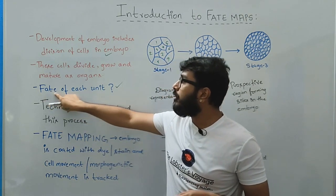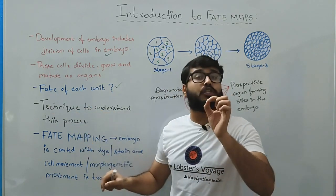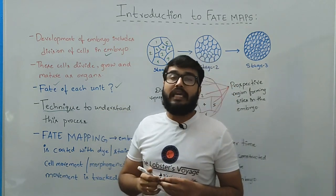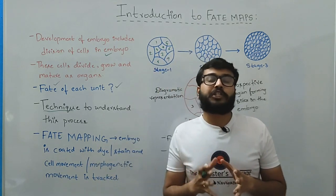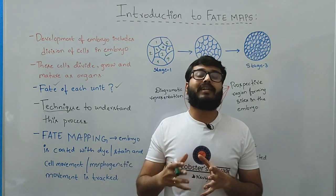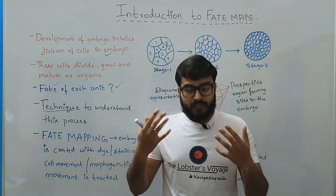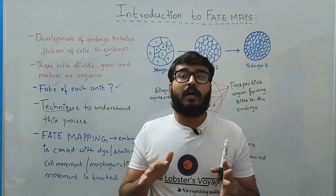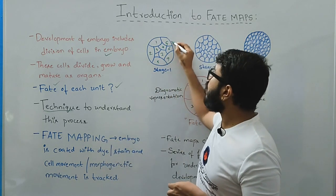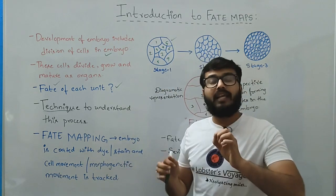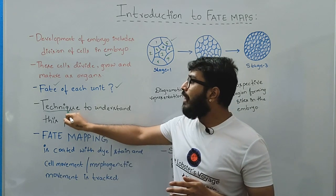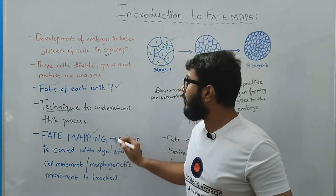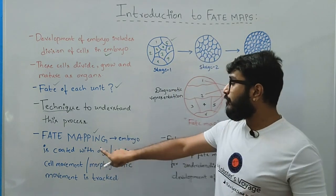So we need to understand the concept of fate mapping — a technique that enables us to understand the fate of each cell in the developing embryo. If the embryo is partially colored, the possible movement of the cells could be tracked. But sometimes, taking the classic example of the frog egg deposited in water, it is almost invisible in the water medium, making it almost impossible to understand cell division and fate. We therefore need a technique to map the fate of each unit in the embryo, and that technique is called fate mapping.